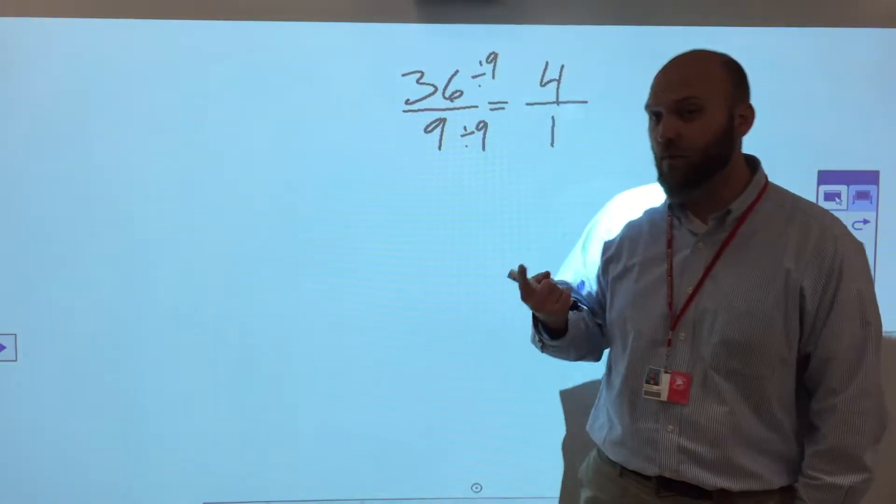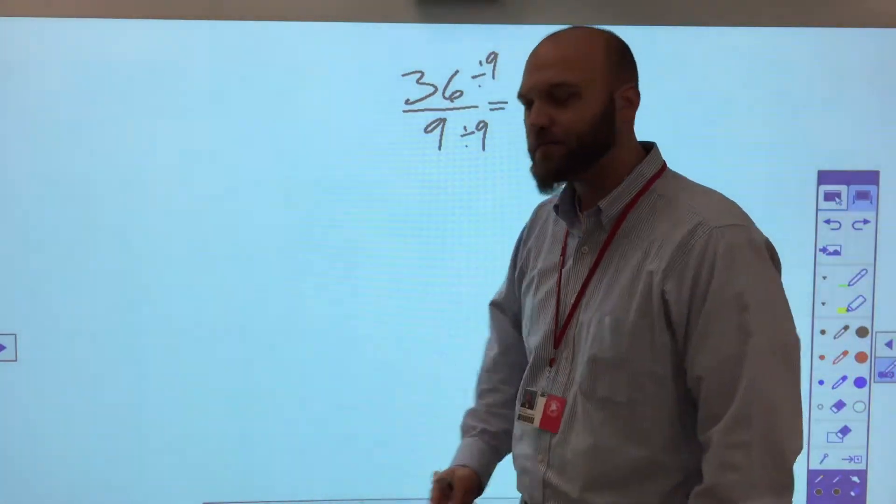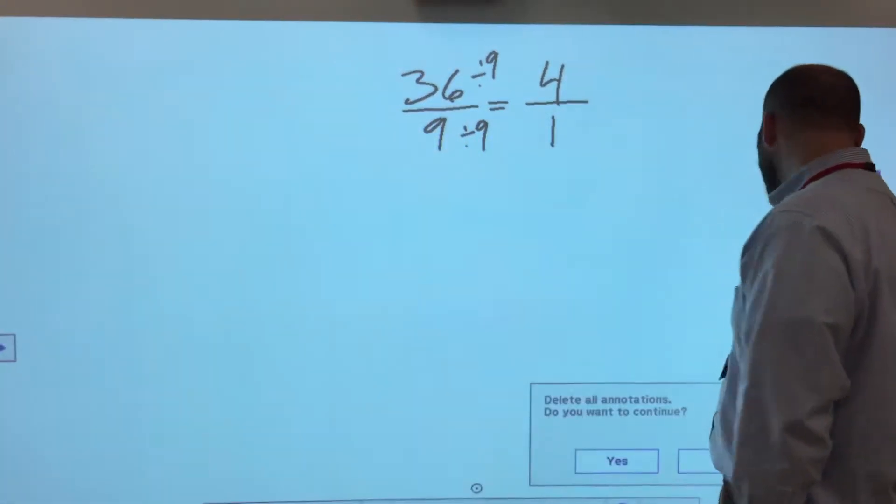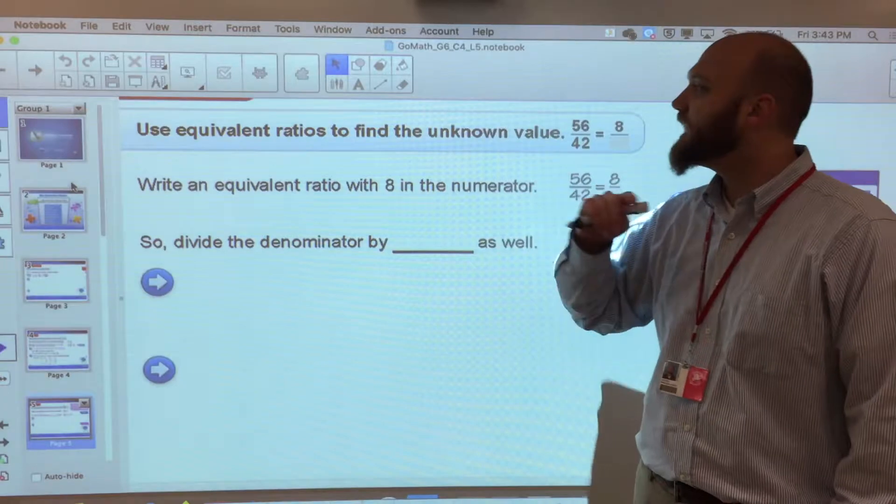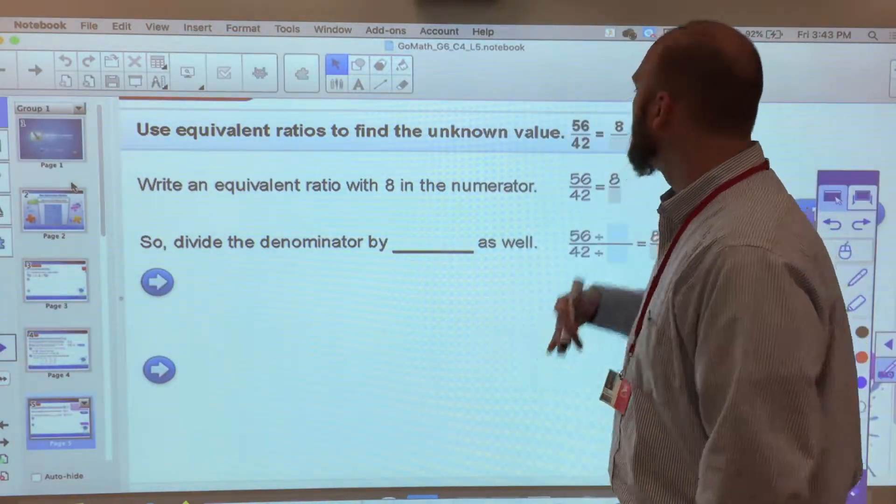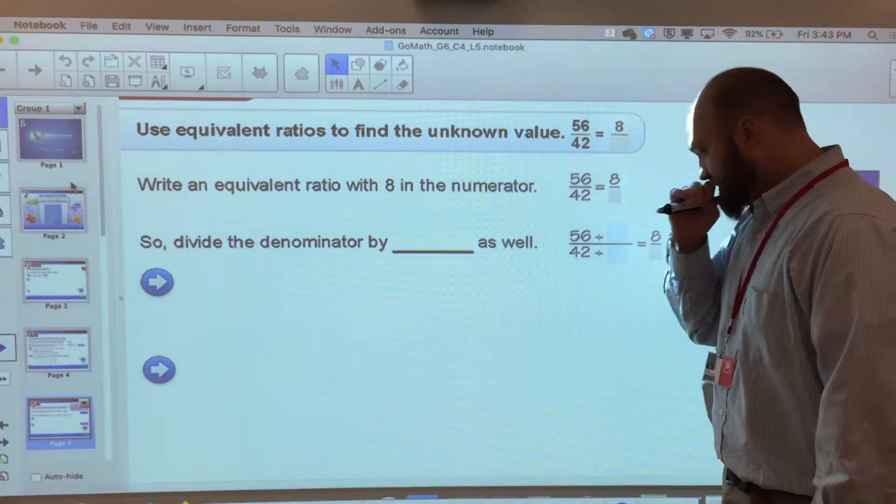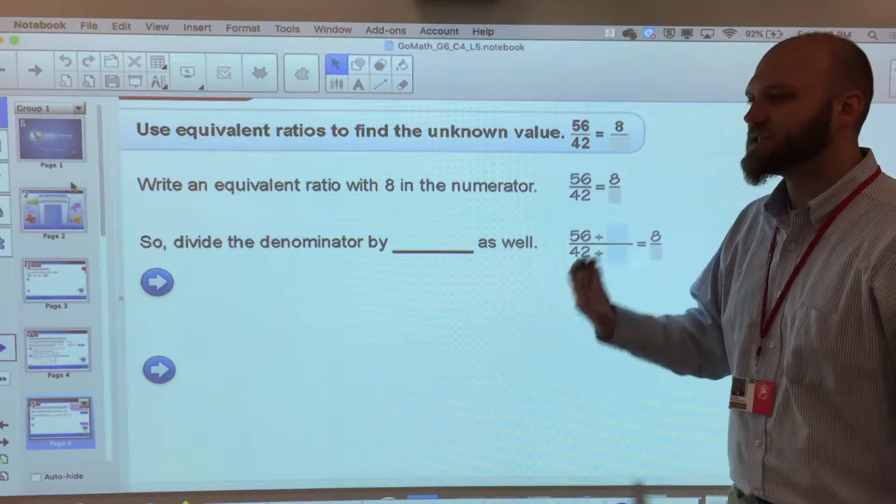That would also, since we're going to a unit of 1 and we're talking about two different items, coincide with the unit rate. So what would something like that look like in our book? So if we moved it to our book, we could say I'm going to use equivalent ratios to find the unknown value of 56 42nds to a ratio. So 56 42nds to a ratio of 8 to something else.